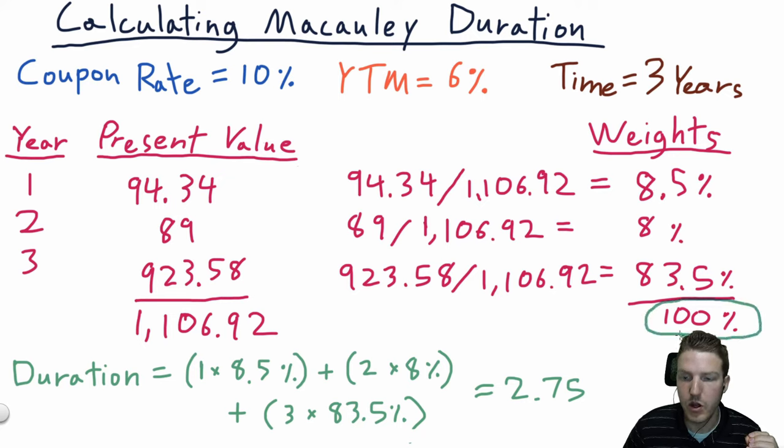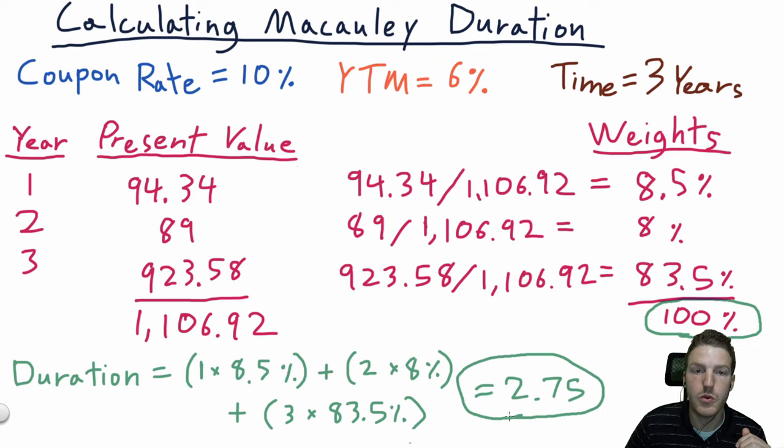Now to calculate the Macaulay duration, we simply take the weighted average present value of each year and then add it together. So for year one, we'll take the number of years one multiplied by the weight of that year, so 8.5%. And then we'll add year two, so two multiplied by 8%, and then year three multiplied by 83.5% to get a total Macaulay duration of 2.75.